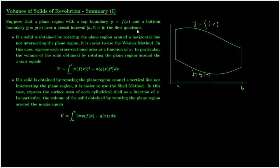In general, if you have a plane region with a top boundary and a bottom boundary over some interval, and you want to rotate the plane region around a horizontal line, then it's easier to use the washer method to set up the integral for the volume of the solid of revolution. If you rotate the plane region around a vertical line, it's easier to use the shell method.